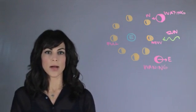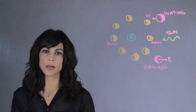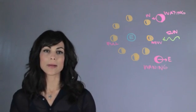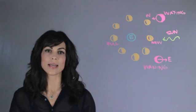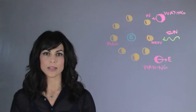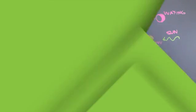But generally, the waxing crescent points west and the Waning crescent points east. My name is Eylene Pirez and I'm an astrophysicist, and this is which way the crescent points at night.